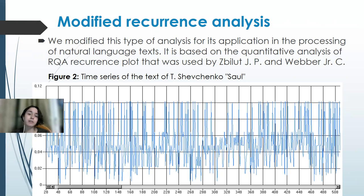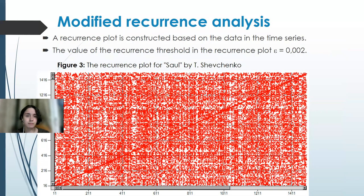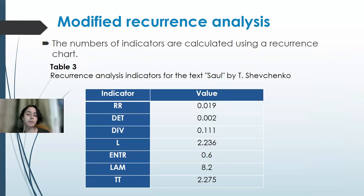On screen you can see the time series of the text 'Saul' by Taras Shevchenko. Using this time series, we can create a recurrence plot, which displays repeating states at different moments in time and respectively different places in the text. The indicators calculated using the recurrence chart represent different types of repetition of statistically close sequences of characters and n-grams. Table 3 shows all recurrence analysis indicators for 'Saul' by Taras Shevchenko.